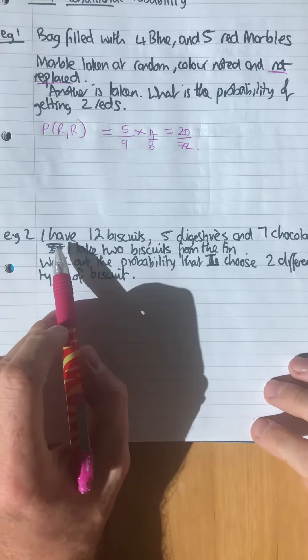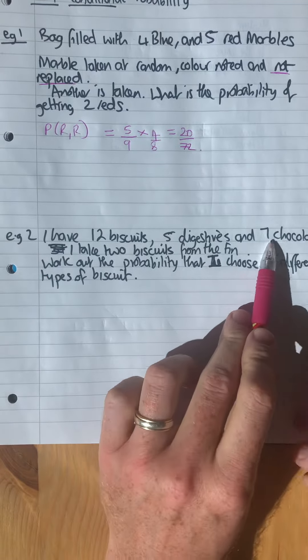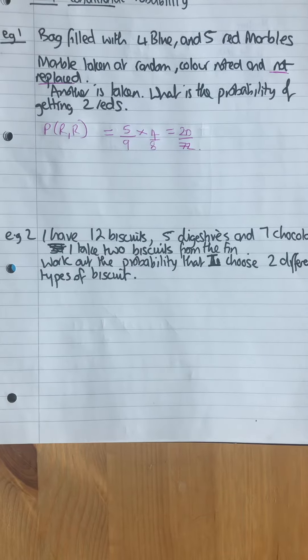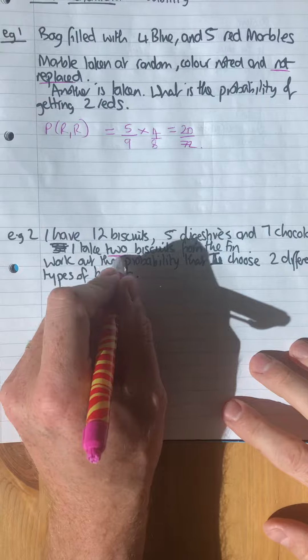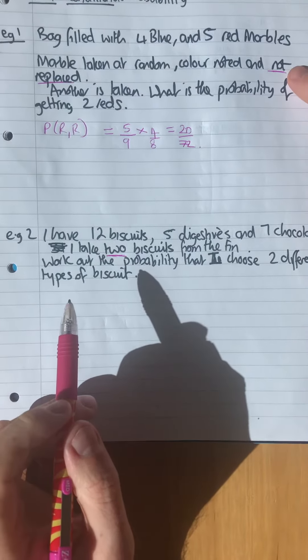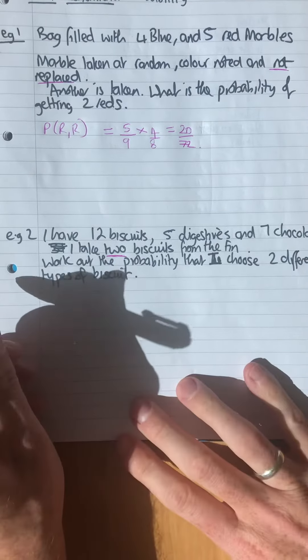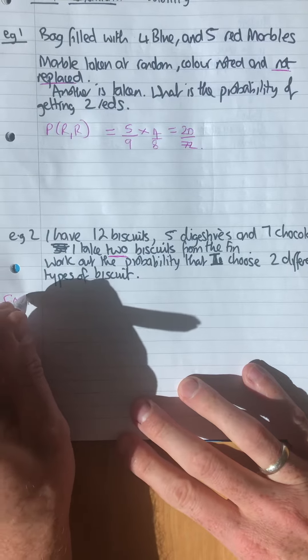Okay, example two: I've got 12 biscuits, 5 digestives and 7 chocolate. I take two biscuits from the tin. Like the previous question where it wasn't replaced, you assume that if something is eaten, in other words it's food, then it's not replaced.